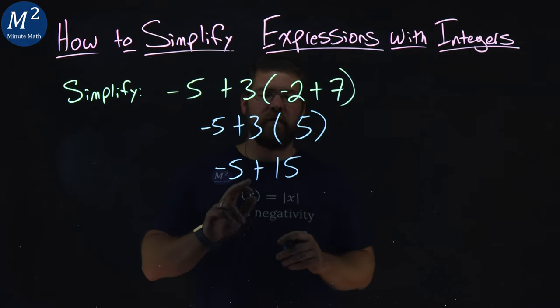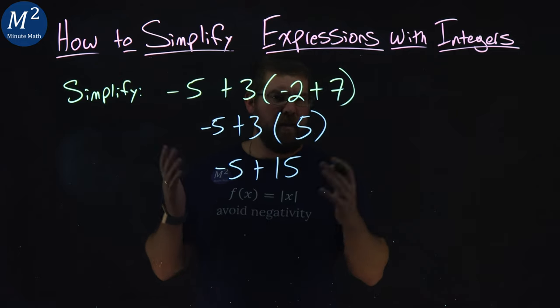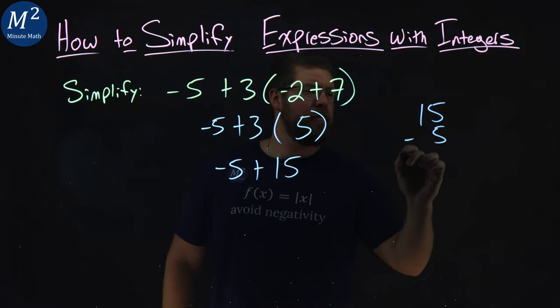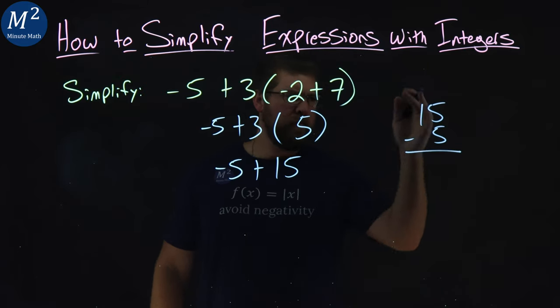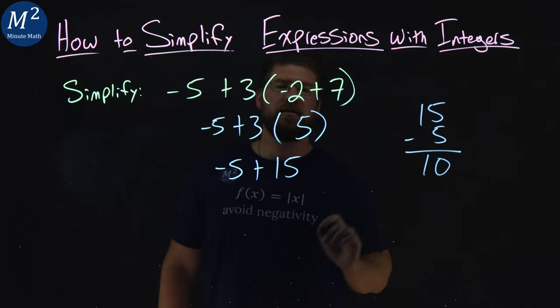Now from here, we have negative 5 plus 15. That's the same thing as 15 minus 5. 15 minus 5 is just 10.